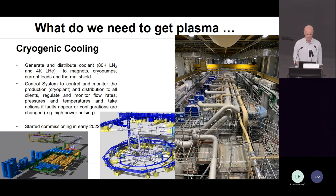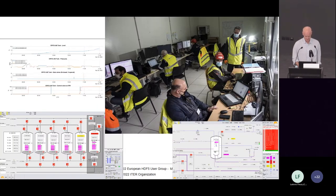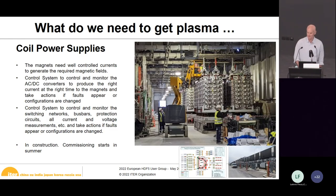We also need cryogenic cooling — the cryo plant produces and distributes nitrogen and liquid helium. The control system has to control and monitor the production, including all pumps, valves, cold boxes, etc., but also distribute it to all clients. Commissioning is ongoing now, and data is being produced. Then we need the coil power supplies to generate currents to the magnets. This is an important system for the control system because it is the main actuator for controlling the plasma. It is currently in construction and commissioning will start next month.